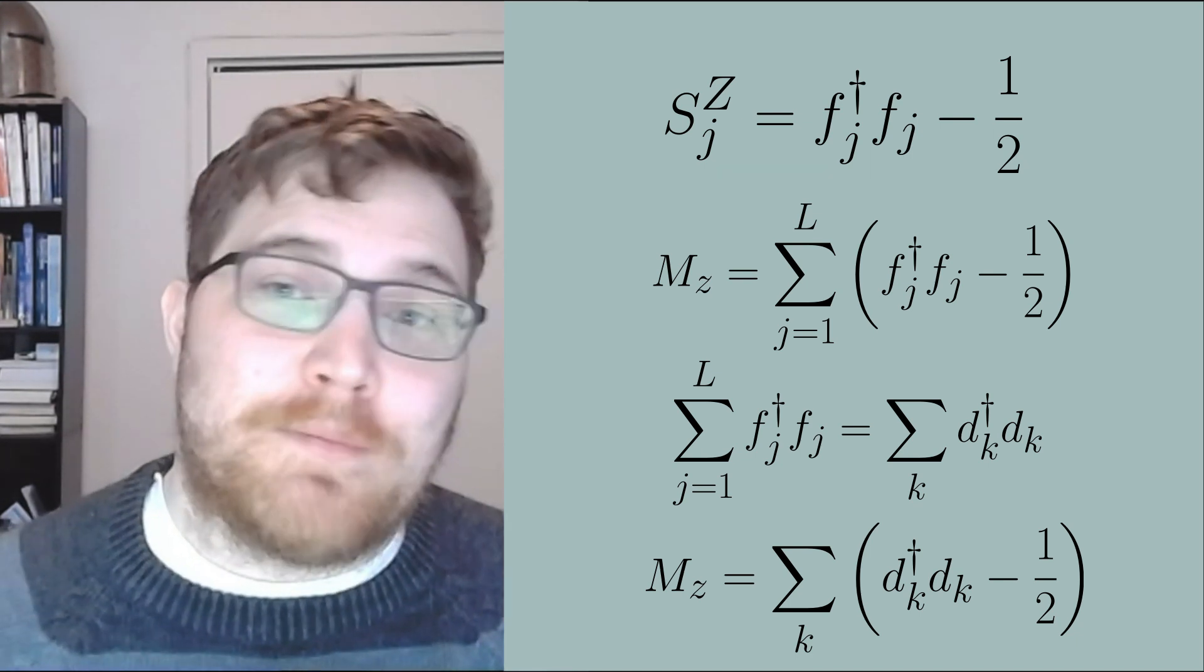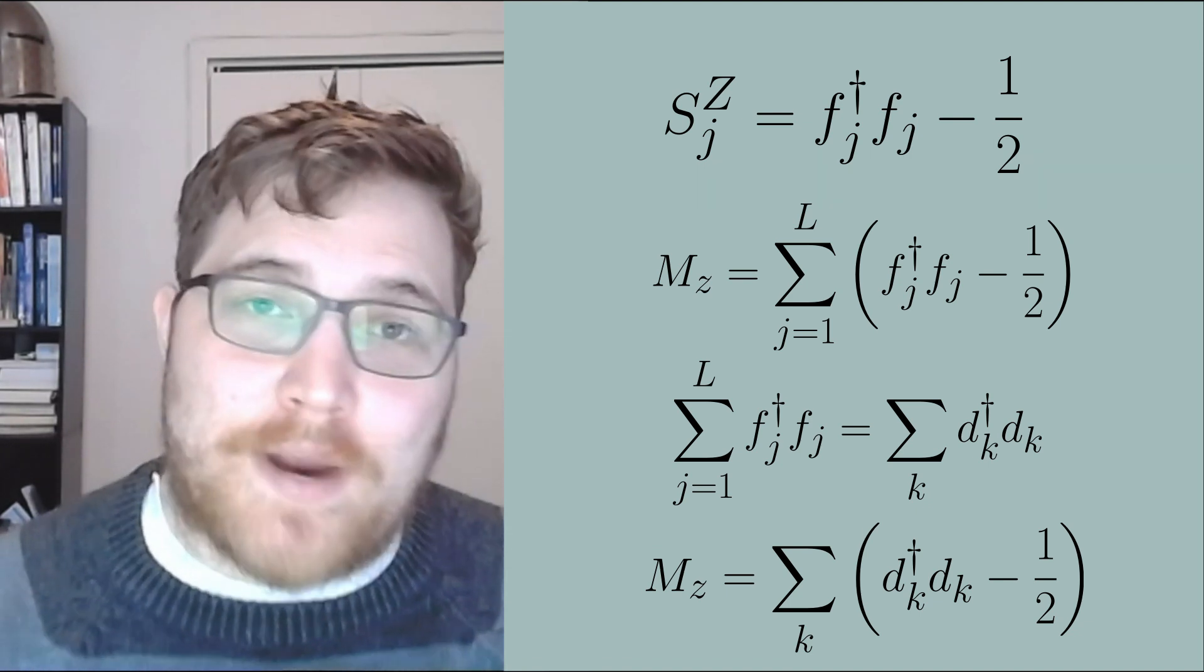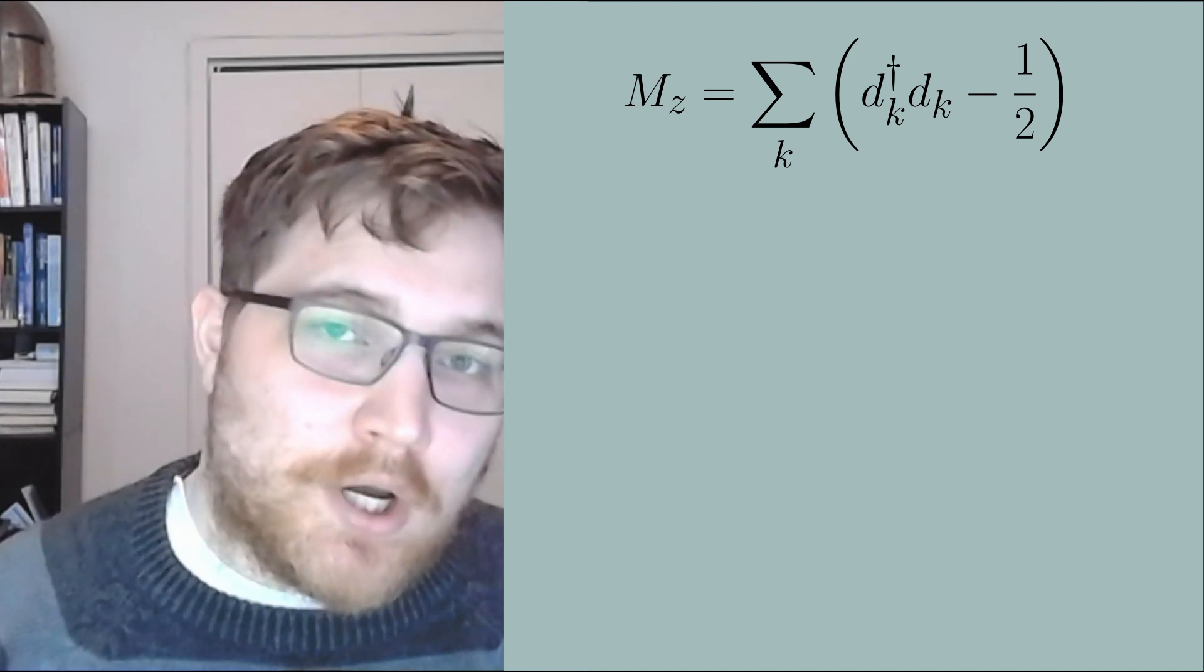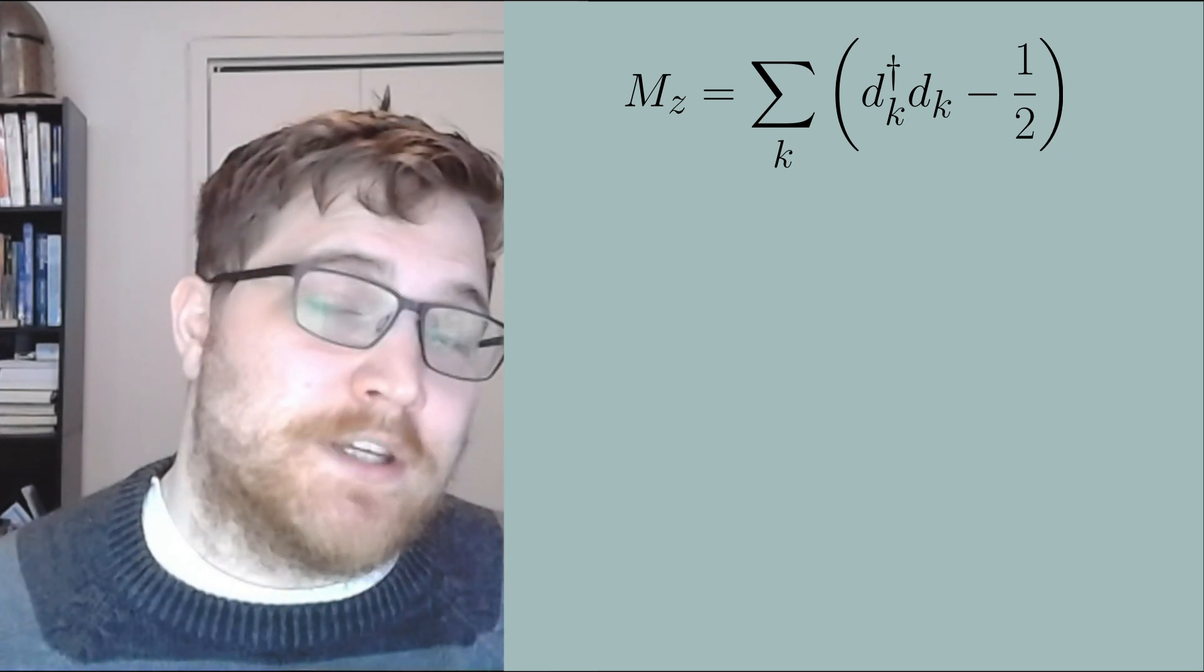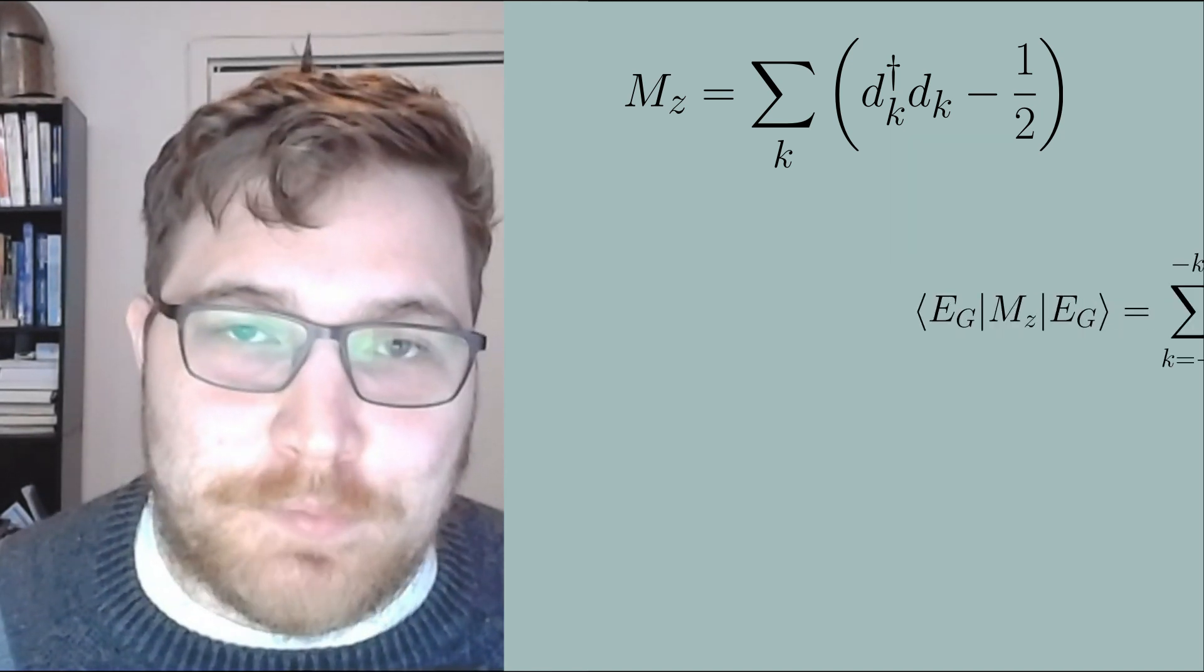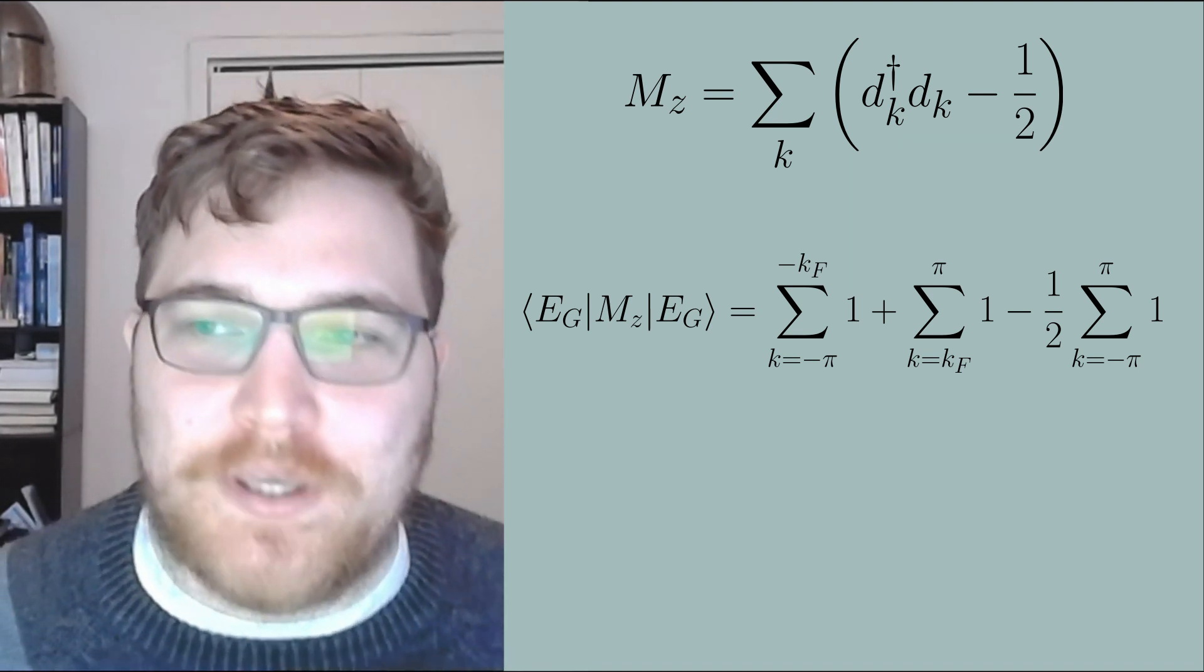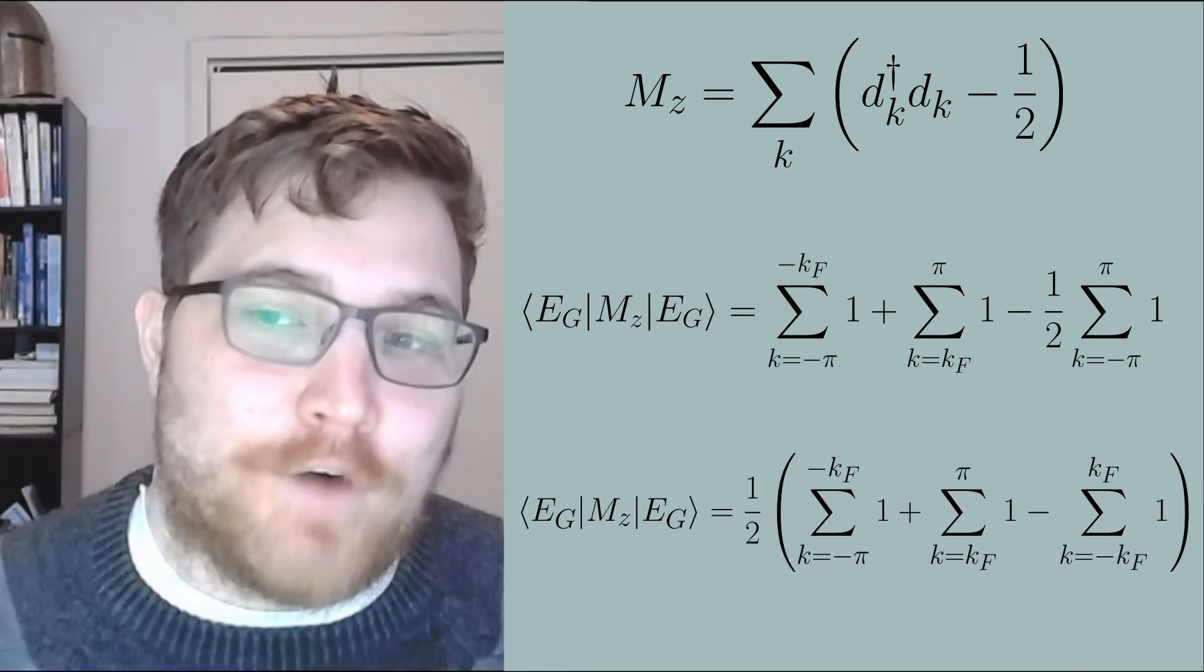Now let's take the expectation value of the total magnetization for the ground state of our Hamiltonian. The definition of our energy eigenstates is really simple: either the eigenmode is on or it's off, or more formally it's either occupied or unoccupied, giving us a zero or a one in its expectation value. By our definitions this breaks our sum into the following sums of ones. Reorganizing this a bit we can express the expectation value for the total magnetization as the following expression.